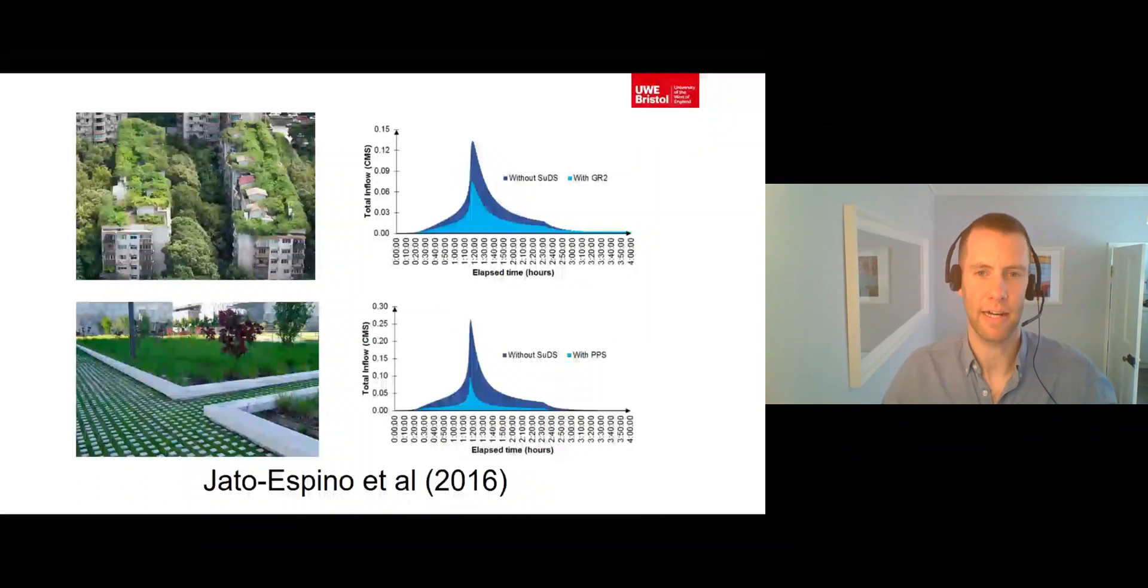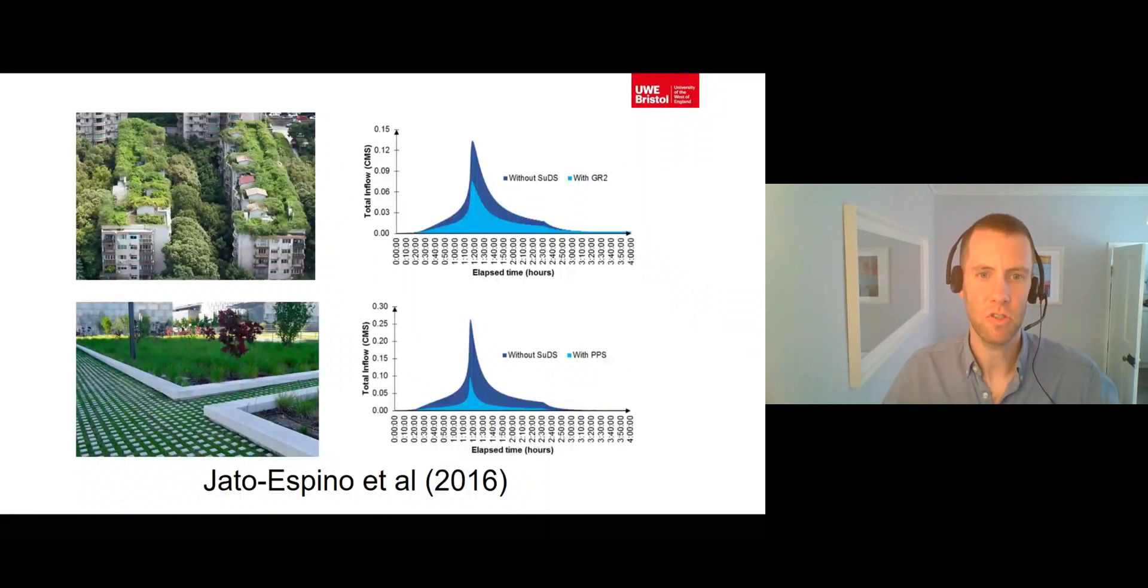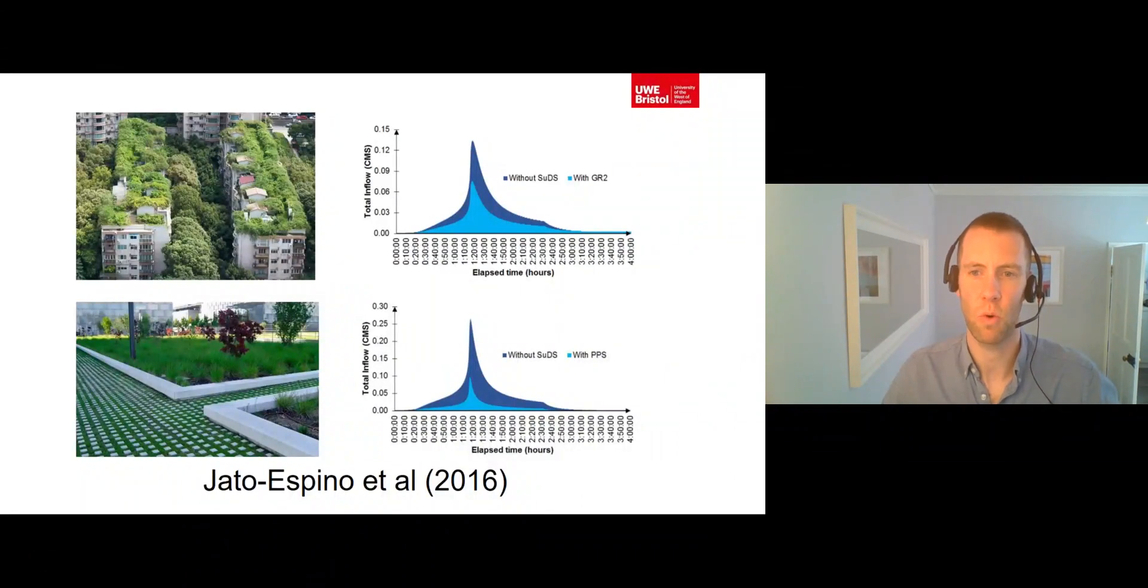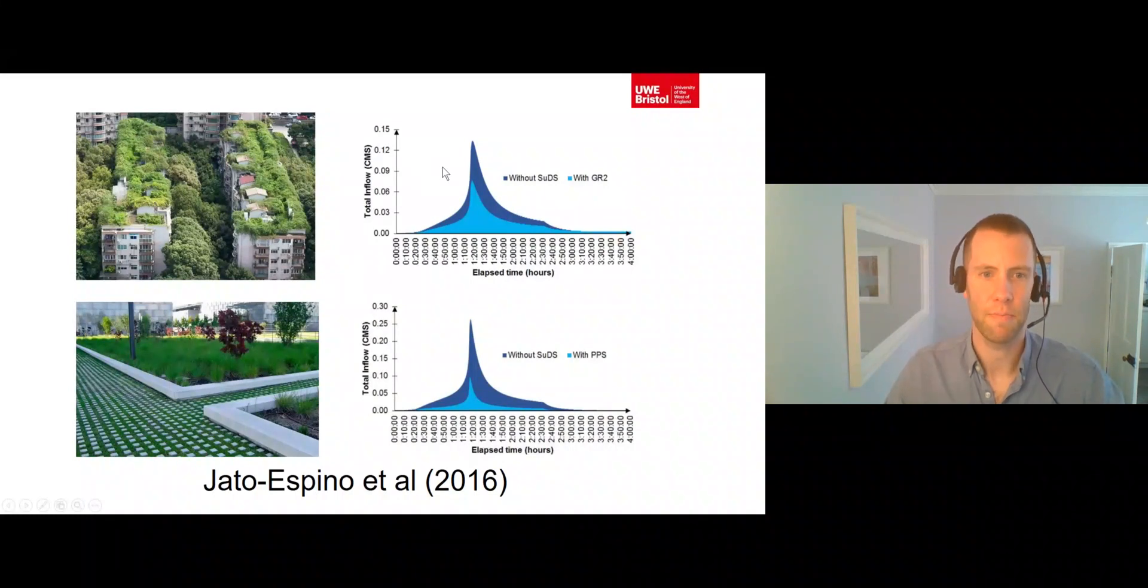Research by Jato Espino et al. in 2016 within the city of Donostia in northern Spain demonstrated the usefulness of SUDs in reducing the volume of water generated after a rainfall event and their ability to prevent localised flooding. The top graph shows how the peak flow with green roofs in light blue was lower than the peak flow without green roofs in dark blue. Similarly, the bottom graph shows how the peak flow with permeable paving in light blue was lower than the peak flow without permeable paving in dark blue.